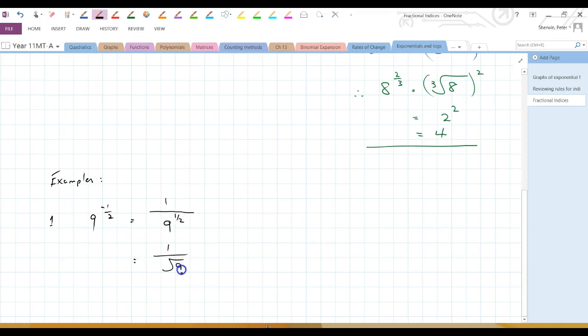So here we go, 1 over 9 to the half. Oh, 9 to the half, that's the square root of 9. That's the square root of 9. The square root of 9 is 3. So 9 to the half is 1 third.